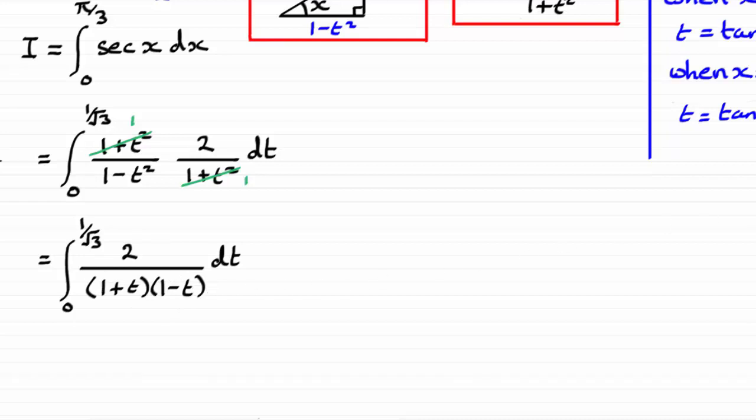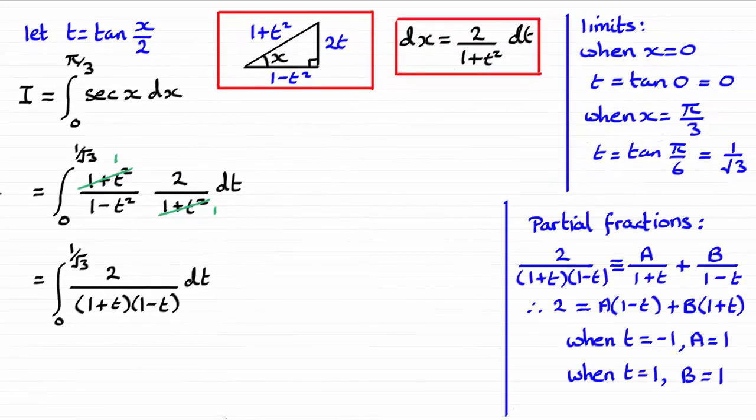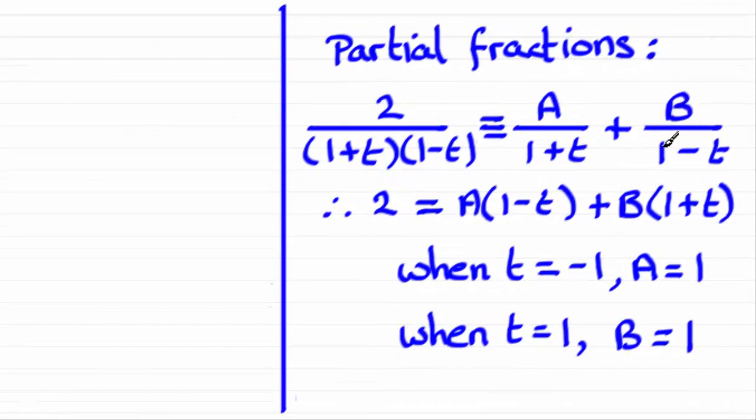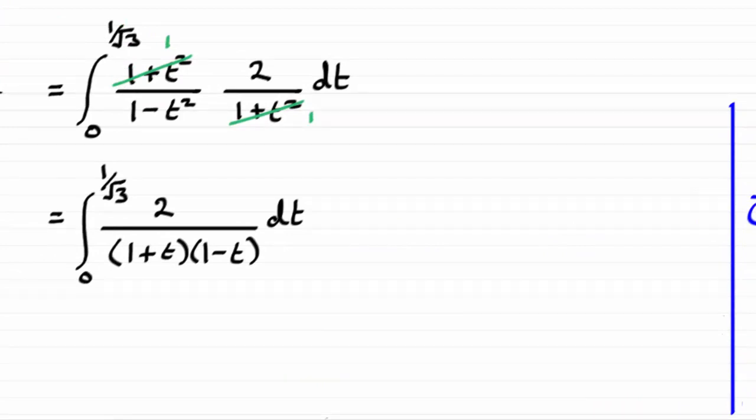These are linear factors on the bottom, and so they're going to lead to partial fractions of the form a over 1 plus t plus b over 1 minus t. Multiplying throughout by 1 plus t, 1 minus t leads to this line. And we can work out the constants a and b by letting t equal minus 1, which gives us a is 1. And when t equals 1, b equals 1. So if I just substitute those values for a and b in, we're going to have this new integral here.